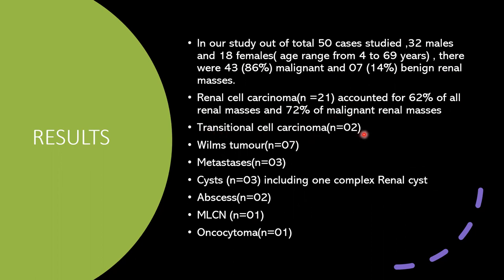Transitional carcinoma: 2 cases. Wilms tumor: 7 cases. Metastasis: 3 cases. Cysts: 3 cases. Abscesses: 2 cases. Multilocular cystic nephroma: 1 case. Oncocytoma: 1 case.